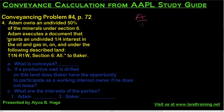Adam owns 50% under section six. Then Adam executes a document. Here's the key word language — he executes a document that grants an undivided one quarter interest in the oil and gas in, on, and under. So right away we know this is going to be a mineral interest, not a royalty interest. A royalty interest would say 'produced and saved' under the following described land.